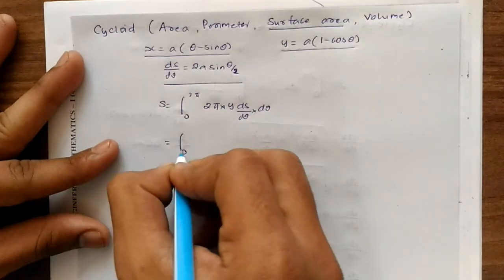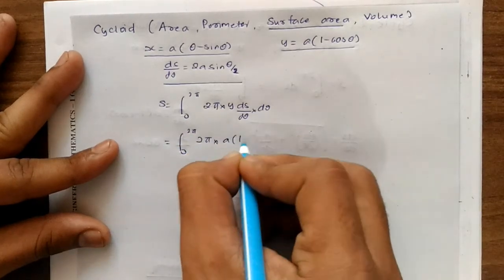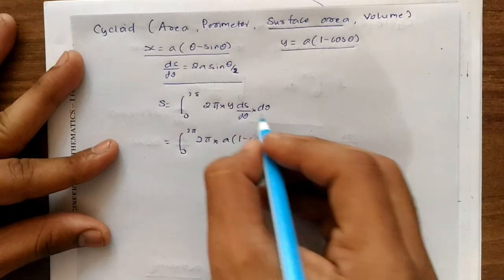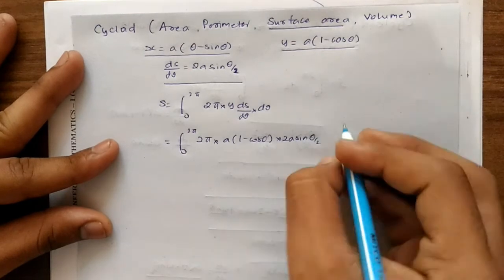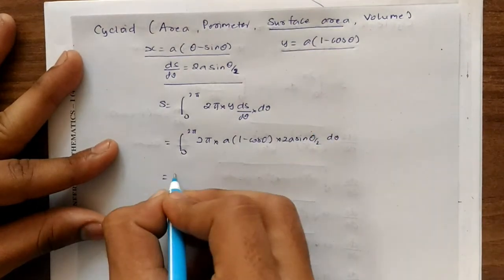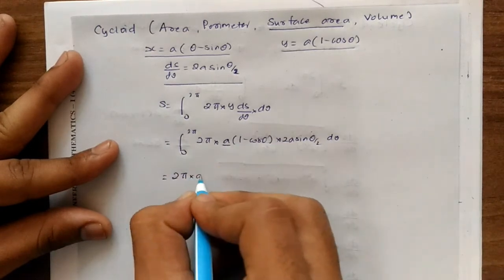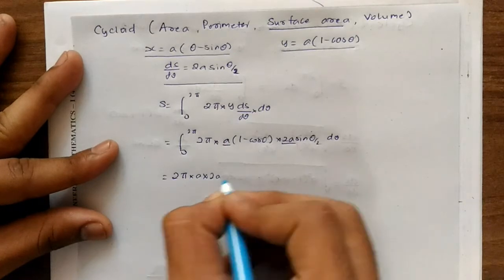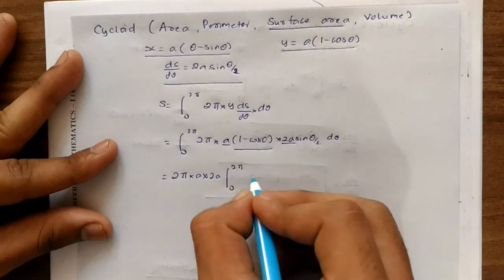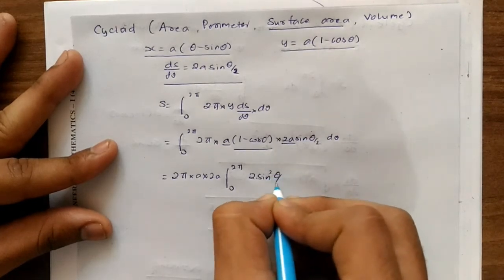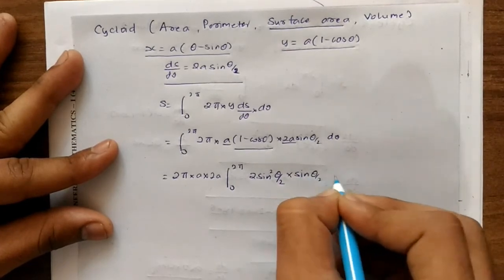So from 0 to 2π, 2π — we know the value of y is a(1 − cosθ), and the value of ds/dθ is 2a·sin(θ/2), end of dθ. We can take 2π outside, this a comes outside, and this 2a also comes outside, giving 2a.